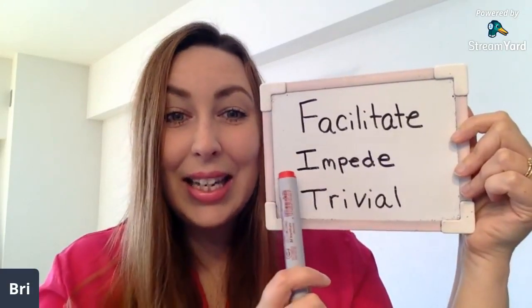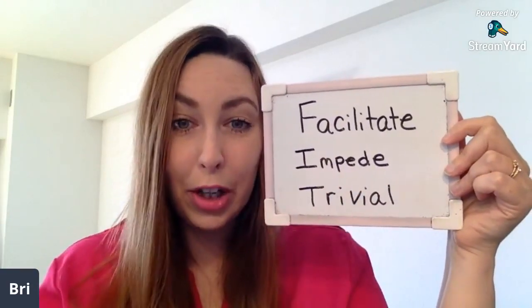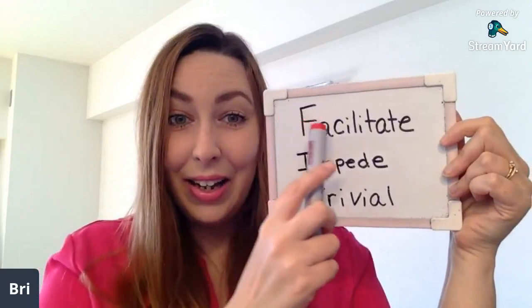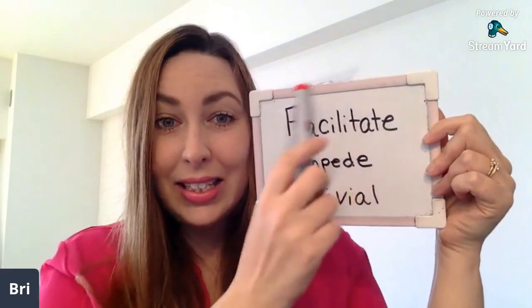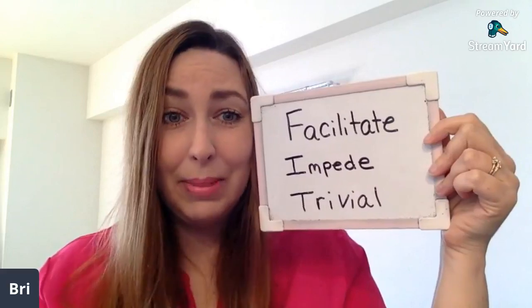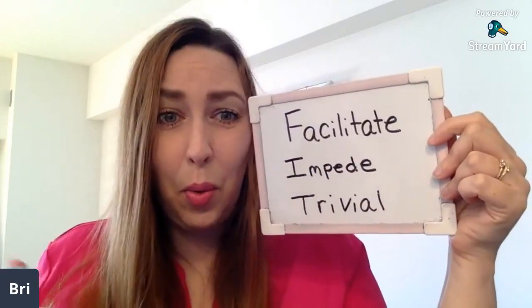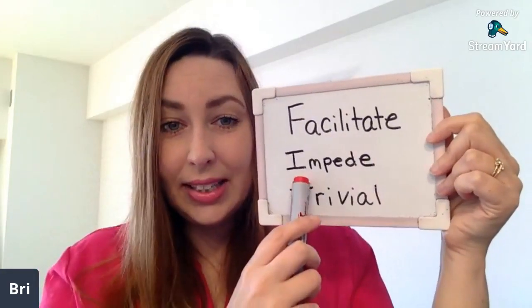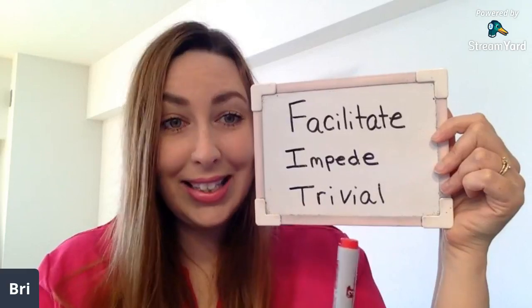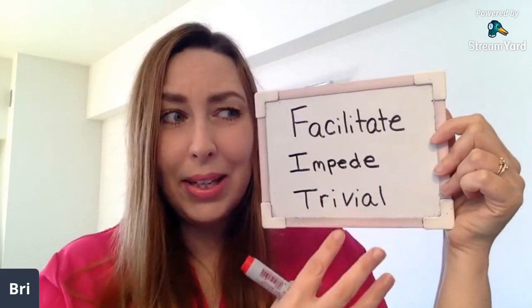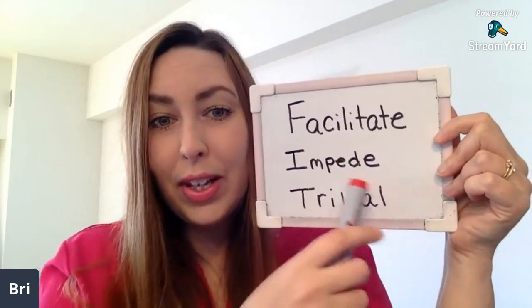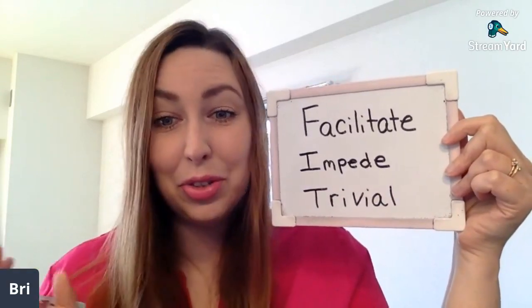The next one is impede. This is also a verb, to impede. Impede is the opposite of facilitate. So if facilitate means making something easier for someone, impede is the opposite — it means making something more difficult or delaying something. The last one is trivial. Trivial is an adjective, and trivial means something that is unimportant or insignificant. So trivial is the opposite of important.